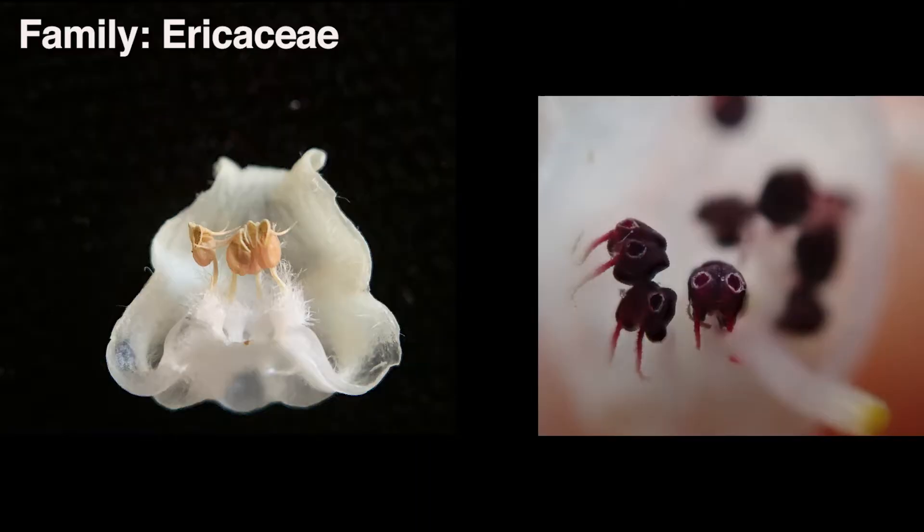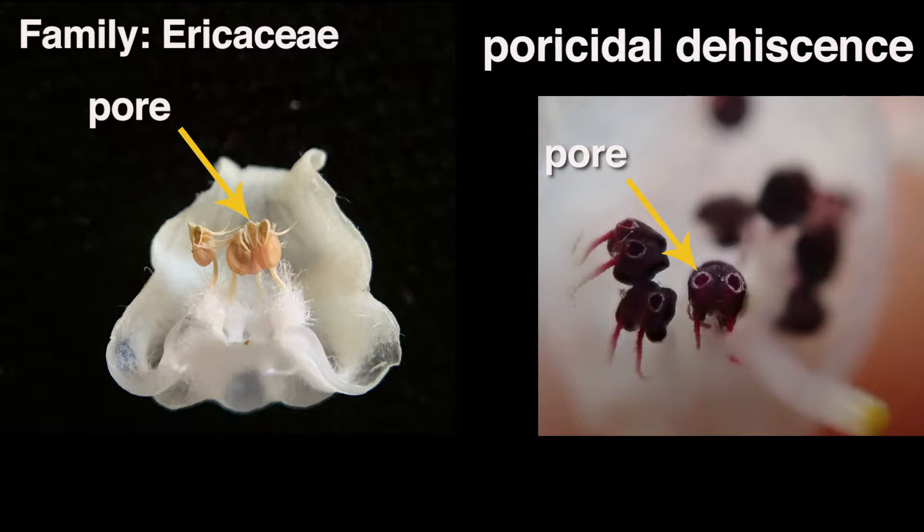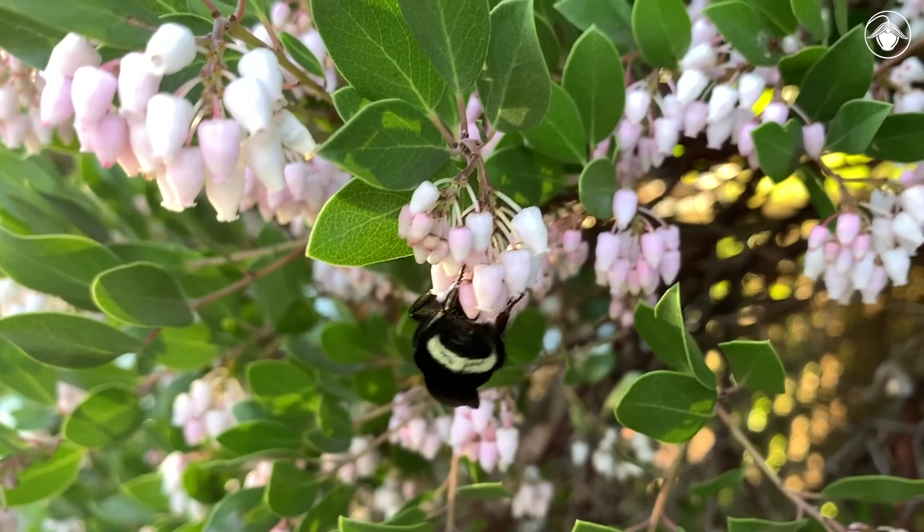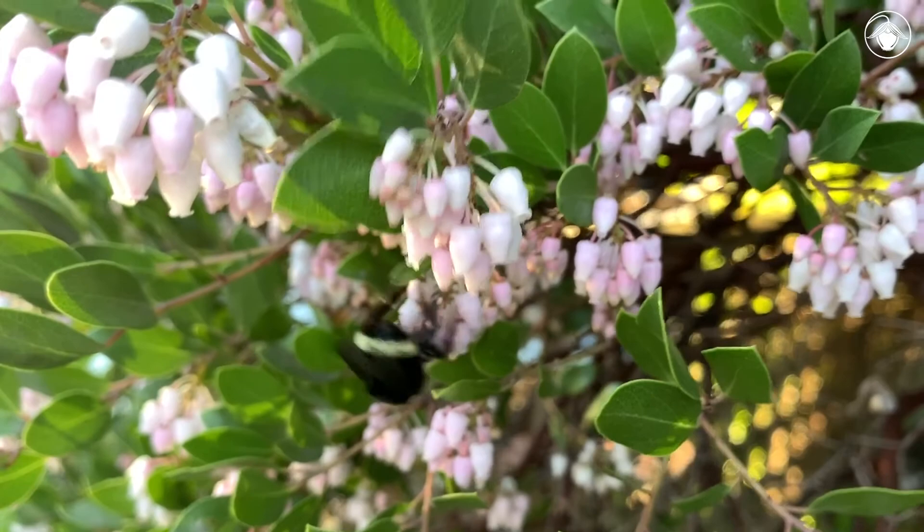In the Ericaceae, pollination is often by bees. Pollen is released through pores at the tips of the anthers — this is called poricidal dehiscence. The release of pollen from the anthers is stimulated by sonication, that is, the buzzing generated by bees who visit the flowers and rapidly vibrate their thoracic muscles, thus earning the term buzz pollination.